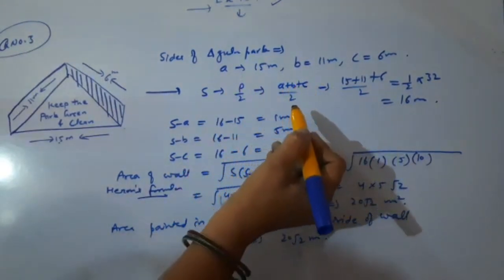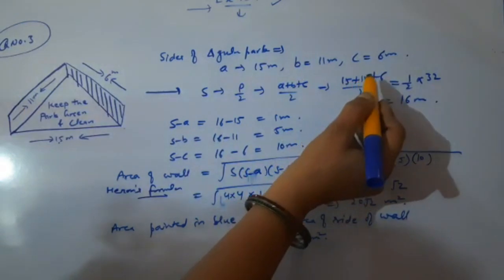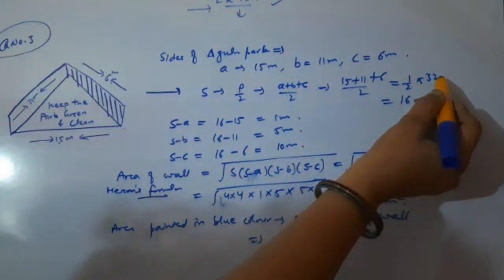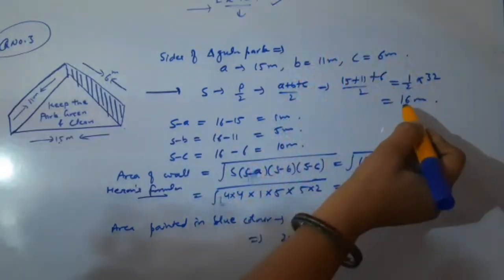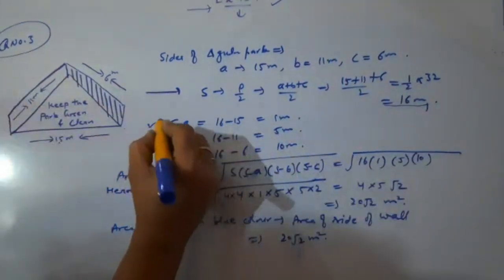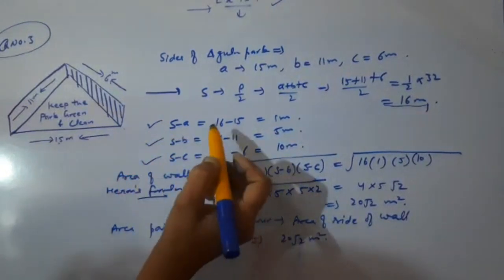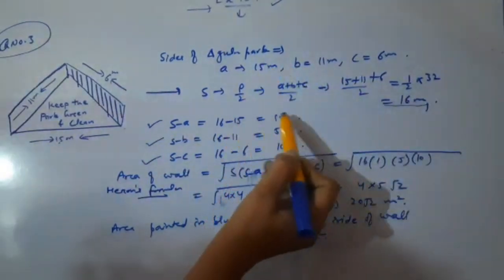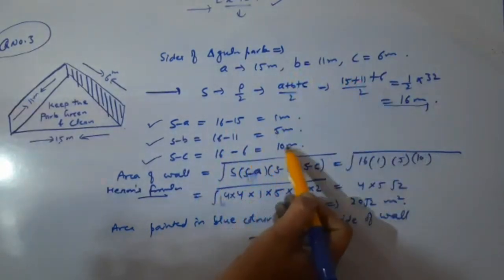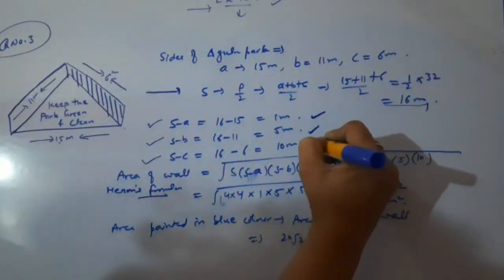S equals (15 + 11 + 6) / 2, that is equal to half into 32, that is equal to 16 meters. Now, S minus A = 16 - 15 = 1 meter. S minus B = 16 - 11 = 5 meter. S minus C = 16 - 6 = 10 meter.